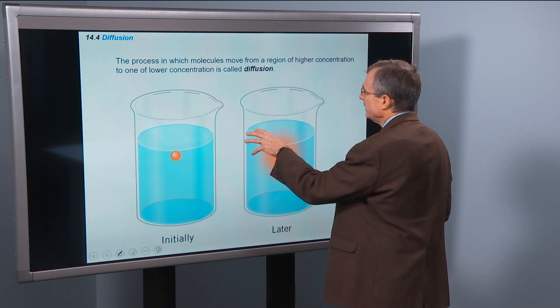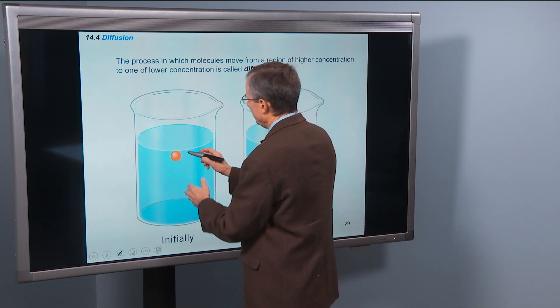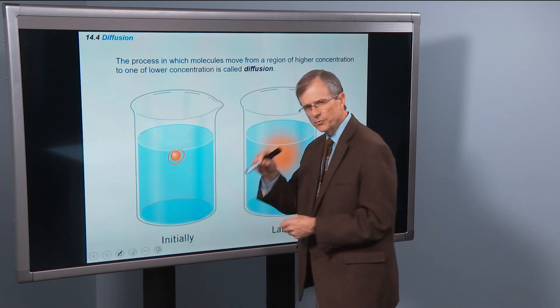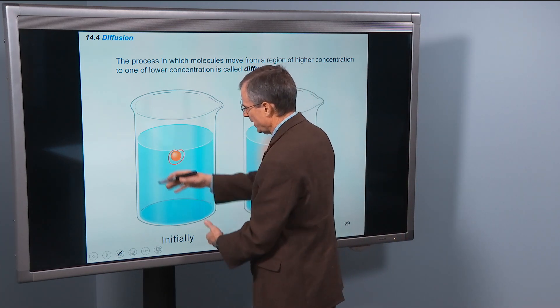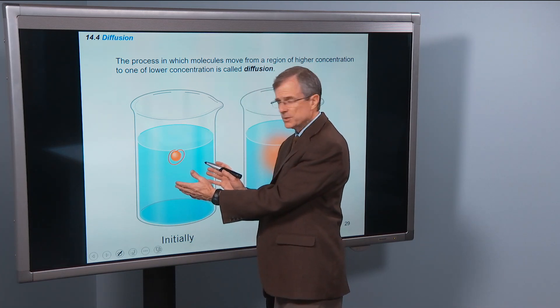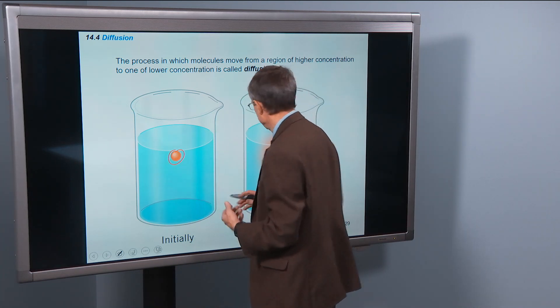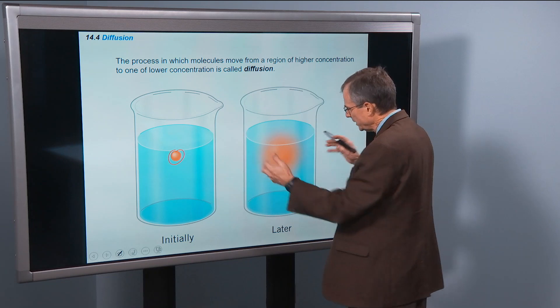So it's the idea that molecules move from a region of high concentration, so that's where you drop the drop in, to regions of lower concentration. So obviously the food dye concentration is lower out here. Slowly it diffuses out.